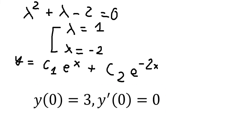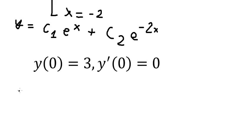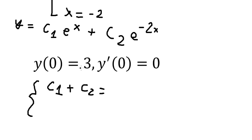For the first condition, putting x = 0 in, both exponential terms become 1, so we get c₁ plus c₂, and this equals 3. That is our first equation. Now we find the first derivative of y.